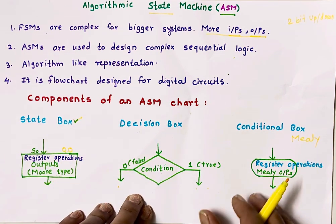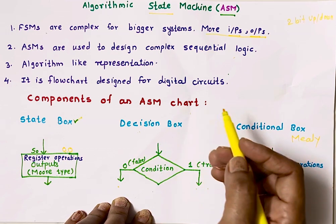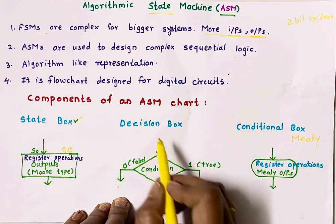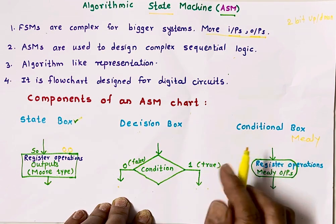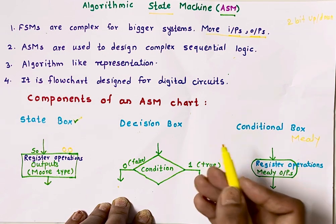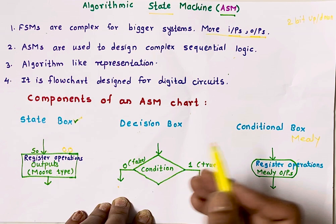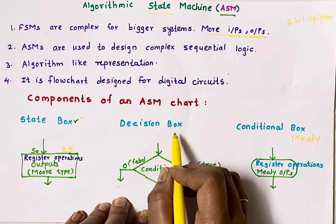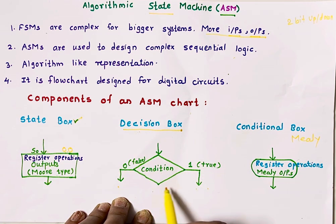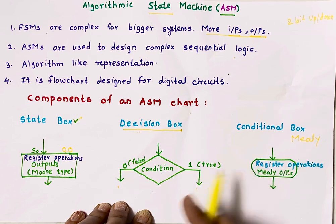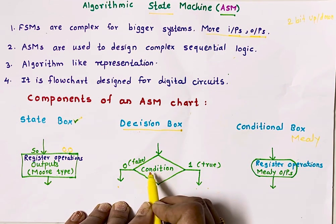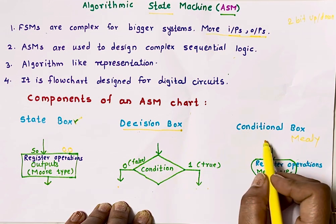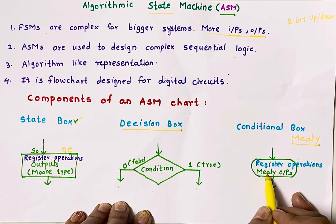The next component is the decision box. In binary, there are two possibilities — either 0 or 1. You are all aware of finite state machines and sequence detectors; in state diagrams, if a 1 comes, it goes to the next state, and if a 0 comes, it may remain in the same state or go back to the previous state. Similarly, to take decisions here, we use the decision box. Its shape is diamond, with one input and two or more outputs. We write the input condition inside this decision box. So the three components are: state box, decision box, and conditional output box. The conditional output box is used in Mealy FSM to represent outputs.